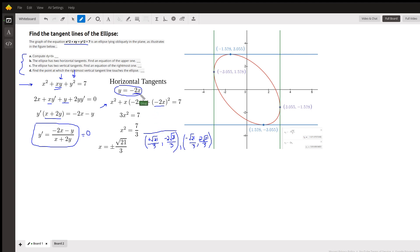So the points where we have horizontal tangents are at plus radical 21 over 3, and the y coordinate is negative 2 times that value, negative 2 times the square root of 21 over 3. And that's actually this point right here. If we plot negative square root of 21 over 3 for the x coordinate, then the y coordinate is this value right here.